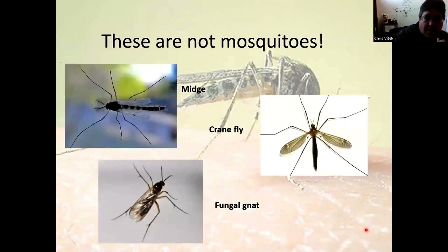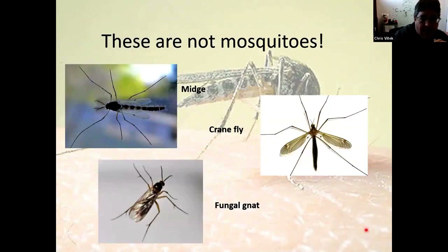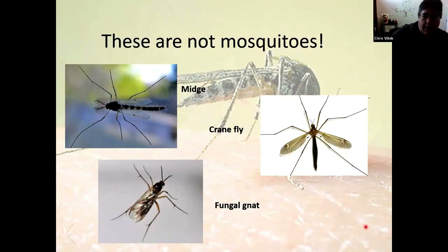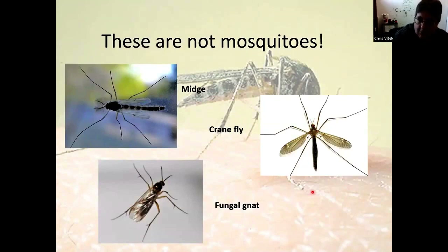Some things you may have seen before and thought were mosquitoes are not mosquitoes — crane flies, midges, and fungal gnats are commonly mistaken because they superficially look similar: two wings, long legs, similar-looking antennae. But the easiest way to identify a mosquito, especially a female, is looking at the mouthparts. These other dipterans don't have that proboscis — that biting implement that female mosquitoes have.